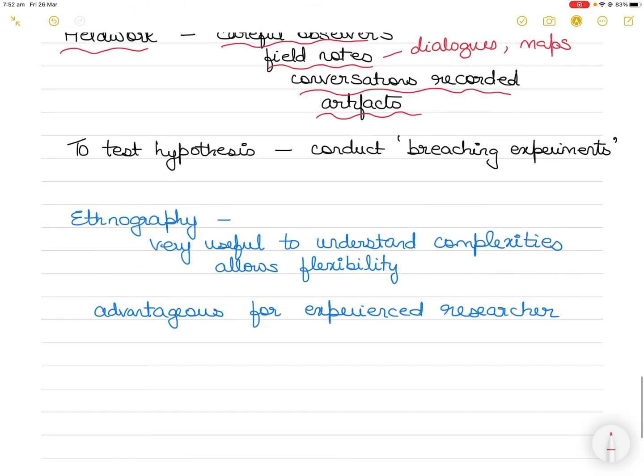In order to test the hypothesis about a group's unconsciously shared beliefs or assumptions, some ethnographic researchers conduct what is called a breaching experiment. That is, they intentionally behave in ways they suspect might violate an unspoken social rule and observe the people's reaction.